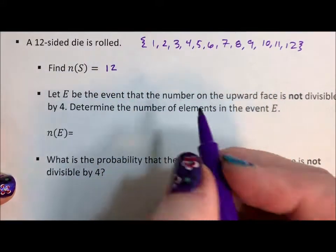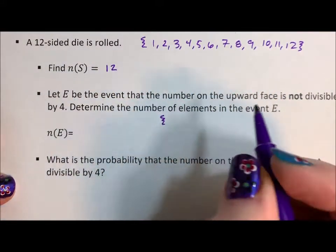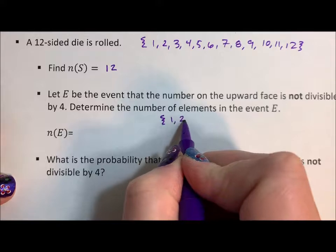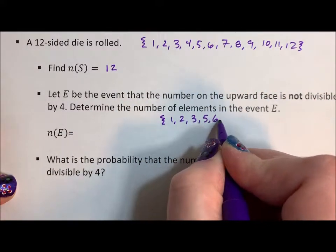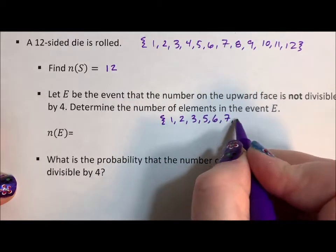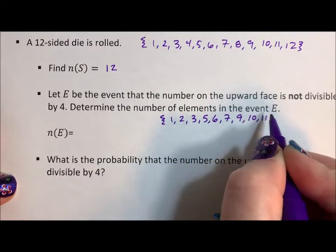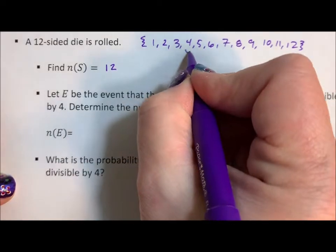Well, just like I did it here, I'm going to write out the sample space really quickly. So if it's not divisible by 4: 1, 2, 3, skip 4, 5, 6, 7, skip 8, 9, 10, 11, skip. I guess I could have just put little x's.